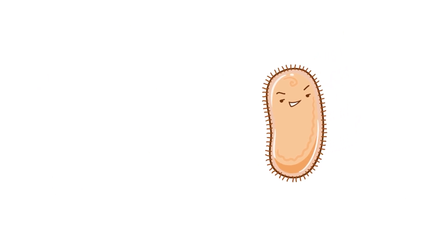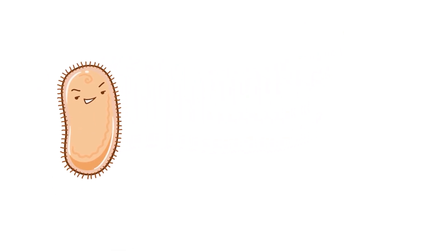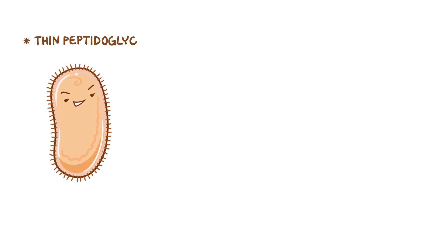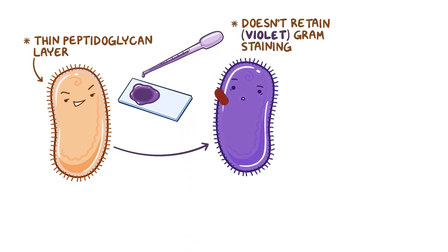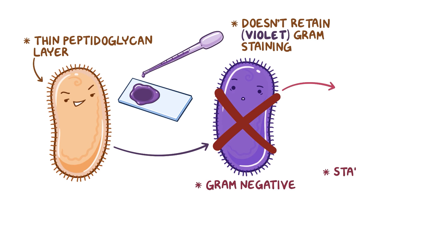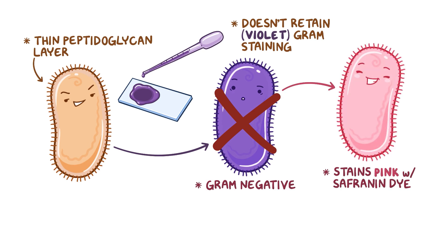Francisella tularensis has a thin peptidoglycan layer, so it doesn't retain the crystal-violet dye during gram staining. Instead, like any other gram-negative bacteria, it stains pink with saffronin dye.